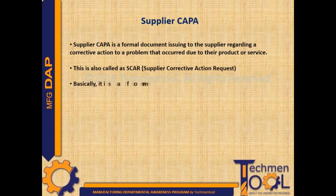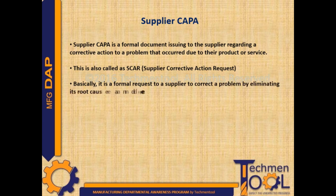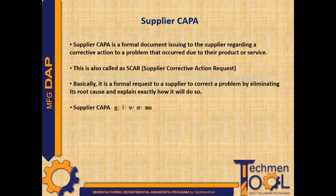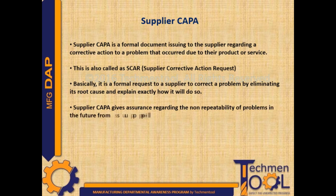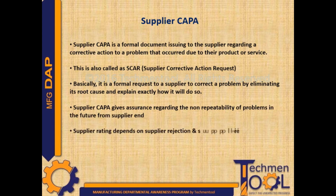Supplier CAPA is also called a CAR. Basically, it is a formal request to a supplier to correct a problem by eliminating its root cause and explaining exactly how it will do so. Supplier CAPA gives assurance regarding the non-repeatability of problems in the future from the supplier end. Supplier rating depends on supplier rejection and supplier CAPA.